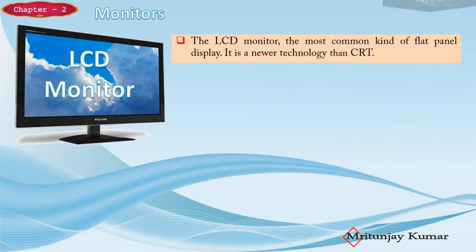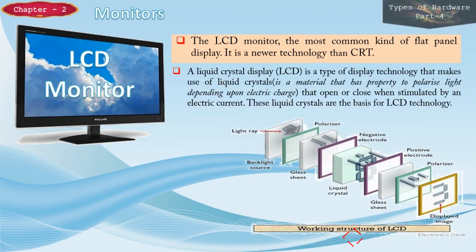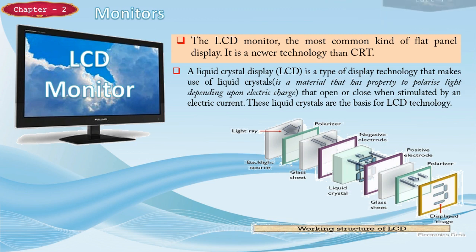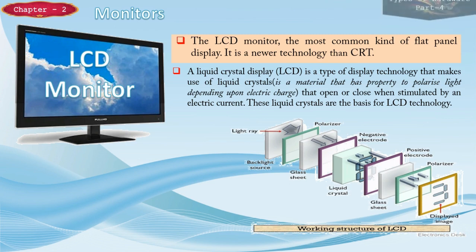The second type of monitor is the LCD monitor — the most common type of flat panel display and a newer technology than CRT. Liquid Crystal Display (LCD) is a display technology that makes use of liquid crystals that open or close when electric current is passed through them. This liquid crystal is a material that has the property to polarize light depending on the electric charge, and these liquid crystals are the basis for LCD technology.